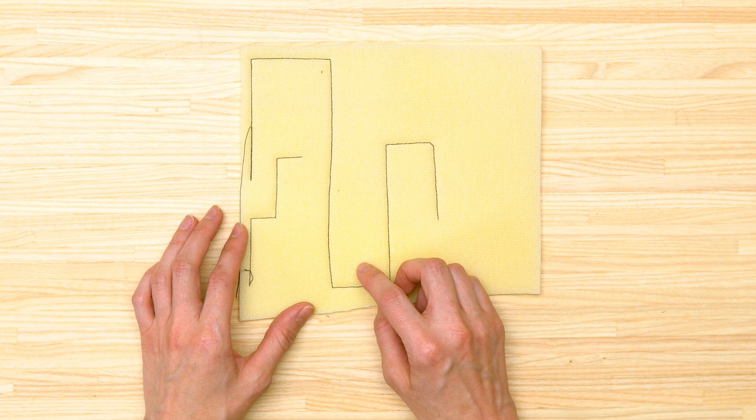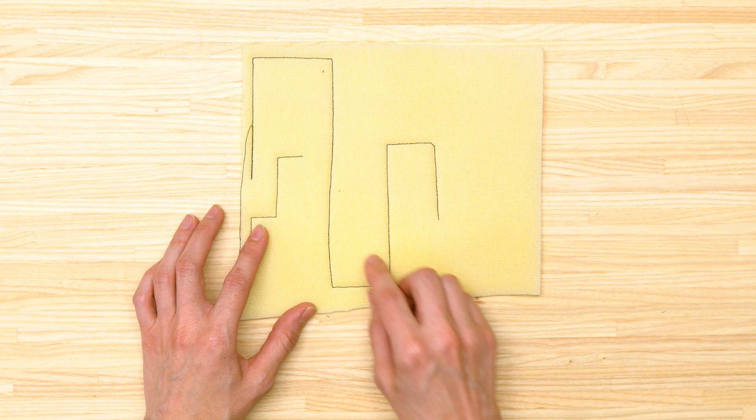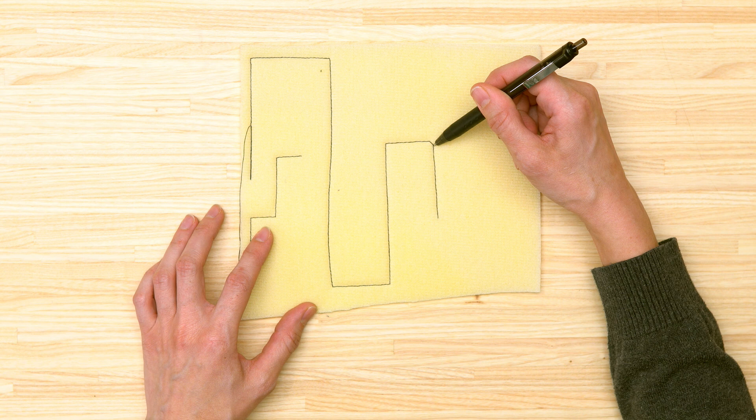When you're sewing corners, either straight or curved corners, you're generally pivoting with your needle. I sewed a few, everything was fine, and then if you take a look at this one - as you can see, the thread kind of cut off the corner, which is not what you want, especially when you're top stitching straps or tabs.